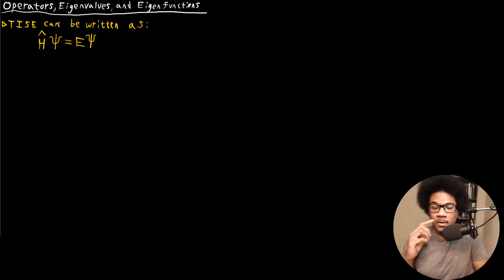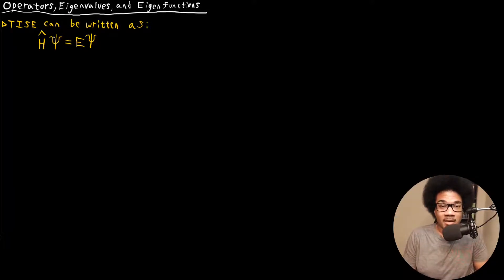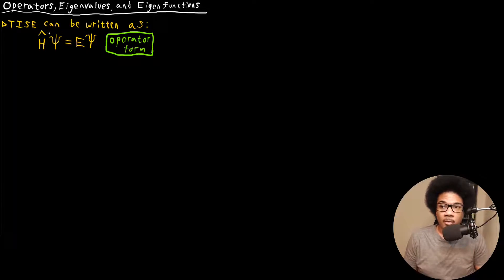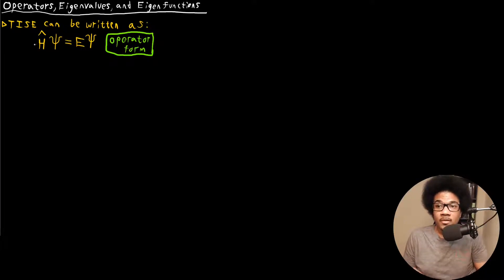Think back to when we first introduced Schrödinger's equation. I've told you that it can be written in this form where you have H-hat psi equals E psi. This is commonly referred to as the operator form — specifically, the operator form of the time-independent Schrödinger equation. We call it that because we denote the Hamiltonian as an operator operating on a wave function, giving you an energy and that same wave function back again. This is a general form of what we call an eigenvalue equation.